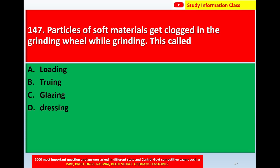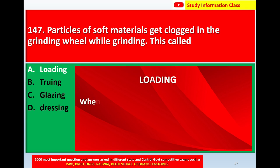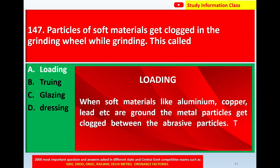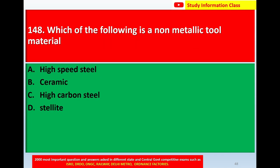For question number 146, a steady rest is generally used for Option B, support for turning long and slender workpieces. Question number 147: The particles of soft materials get clogged in the grinding wheel while grinding — this is called Option A: loading, Option B: glazing, Option C: crowning, Option D: dressing. The correct answer is loading. When a soft material like aluminum, copper, or lead is ground, the metal particles get clogged between the abrasive particles — this condition is called loading.